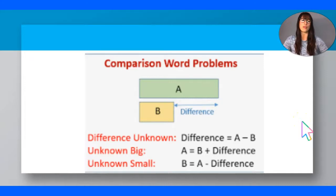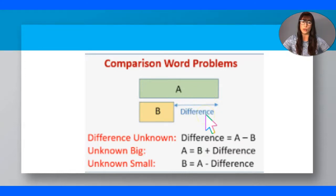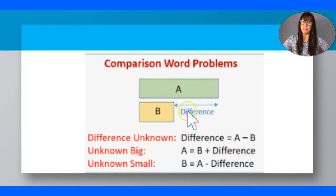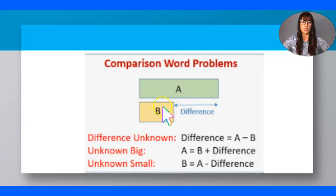Don't forget: with comparison word problems where you have 'more than,' 'less than,' or 'fewer than,' you will draw this type of bar model. If the difference is unknown — if you have a question mark there and don't know how many more or less — you have to do subtraction, because that's just like a part being missing. If the big section is missing, you do addition. If any of the small ones are missing, you do subtraction. So: big section missing → addition; small section missing → subtraction. I hope that helps.